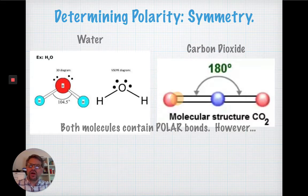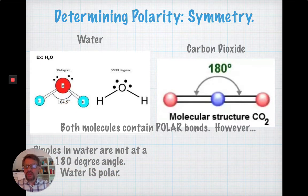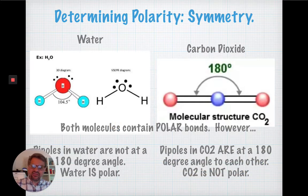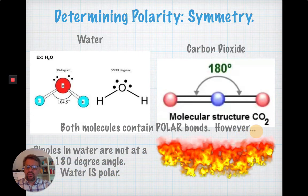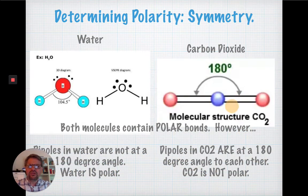So, with water, that's not the case. Because water has a bent shape, its angle here is 104 degrees, roughly. So, the dipoles in water are not at a 180. Because of that, water is polar. Carbon dioxide, even though it contains polar bonds, those bonds, as I said a moment ago, are at a 180-degree angle. They're directly opposite of each other. So, CO2 is not polar.